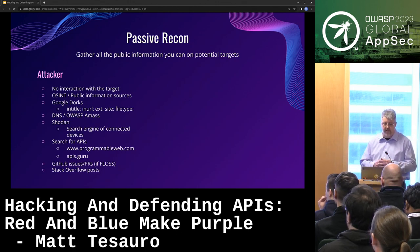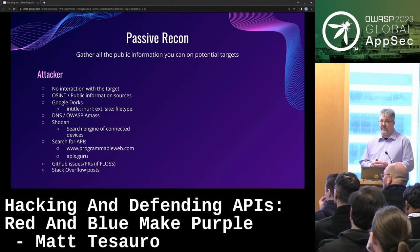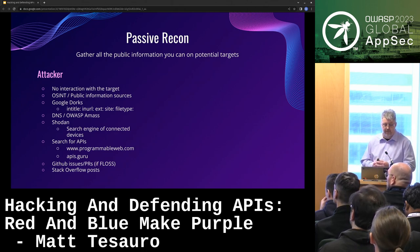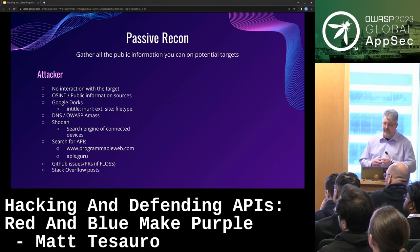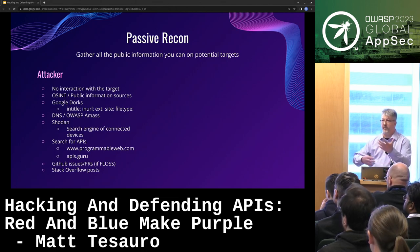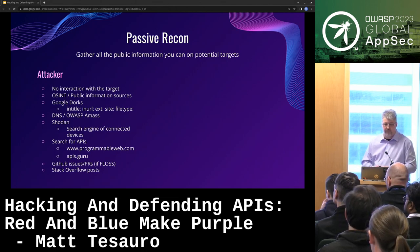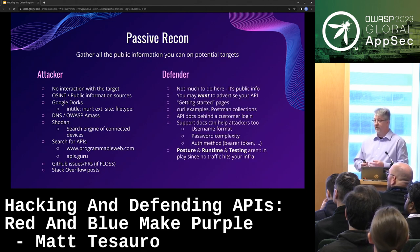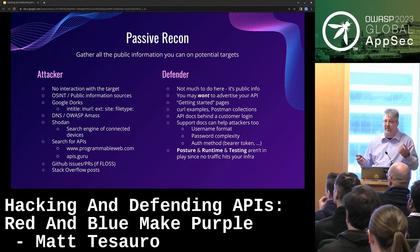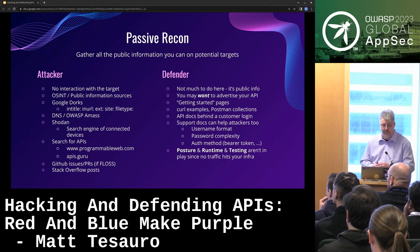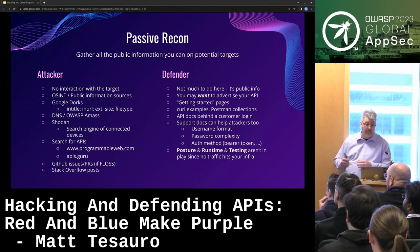You're trying to find APIs if you're doing this completely black box. You can look at GitHub issues, Stack Overflow posts — anything to get some information about your target. From a defender, you don't get much because I'm not sending you any packets. How do you know somebody's doing Google dorks about your company? You probably don't.